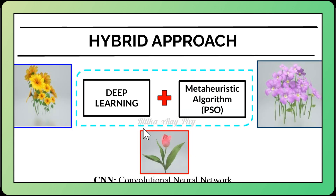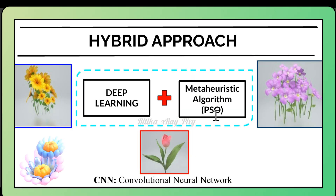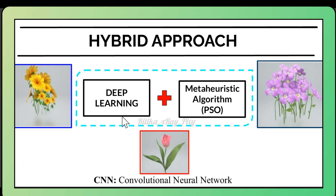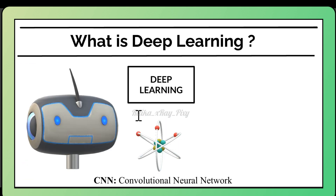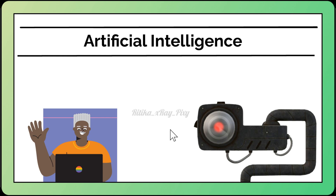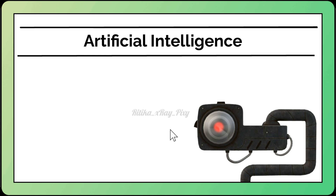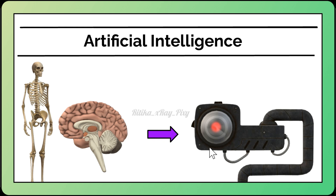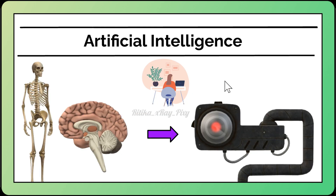We are creating a hybrid approach by combining deep learning with the PSO algorithm. First we will discuss the basics of deep learning, then we will discuss this real life example. Artificial intelligence is a branch of computer science where we try to create machines or software capable of performing tasks that require human intelligence, such as pattern recognition, problem solving, decision making, and language understanding.